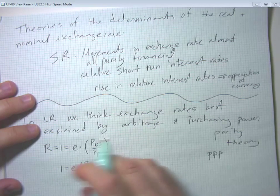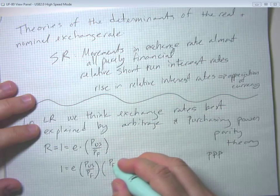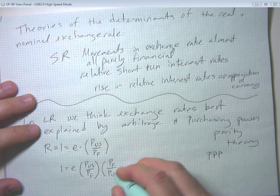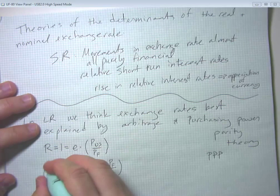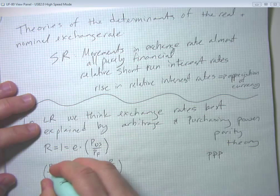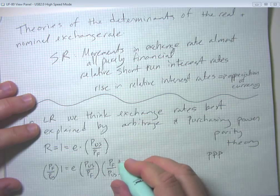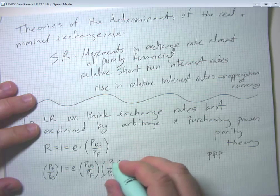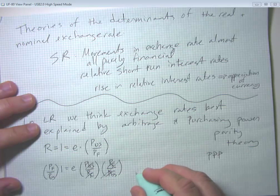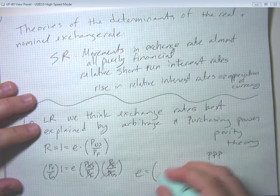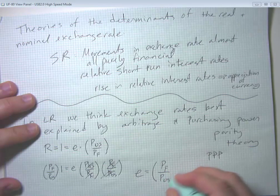Or if we sort of move this around, we're going to multiply both sides by the price level in the foreign country over the price level in the US. This term is going to cancel out. We're going to get a prediction that the nominal exchange rate is equal to the foreign price level over the US price level.